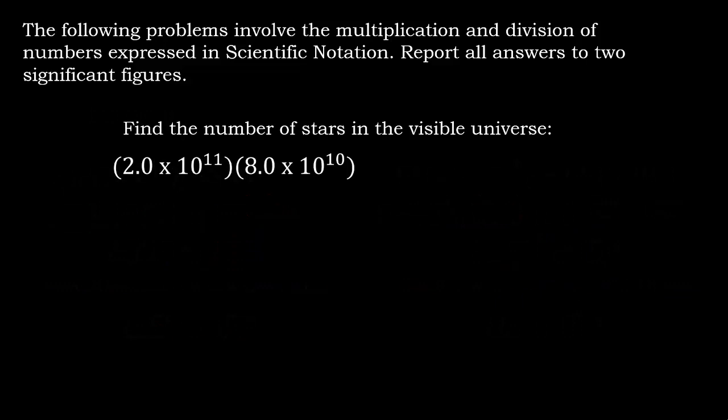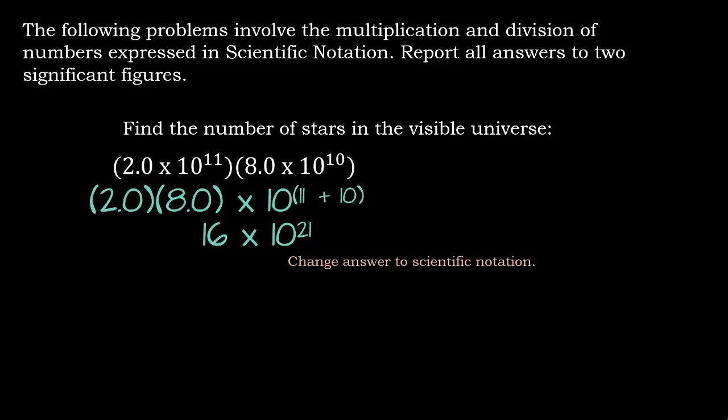Find the number of stars in the visible universe. Ooh, this is exciting. So let's do it. 2 times 8. And then we have 10 to the 11th times 10 to the 10th. So that's why I took 11 plus 10. So we end up with 16 times 10 to the 21. We need to change our answer to scientific notation. So we end up with 1.6 times 10 to the 22nd stars. Wow. That's a lot.